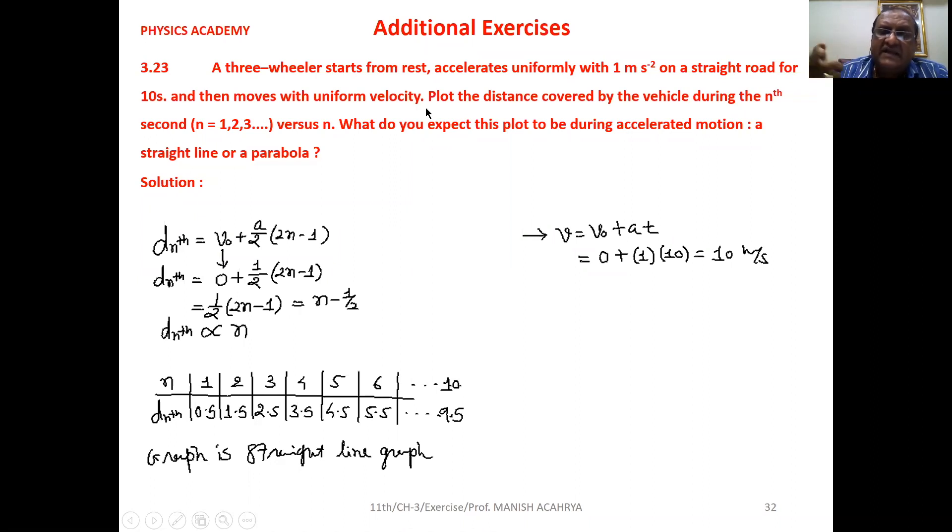After 10 seconds, what is its velocity? V equals V₀ plus AT. V₀ is 0, A is 1, T is 10 seconds, so velocity will be 10 meter per second.